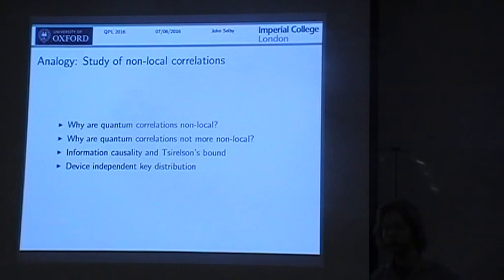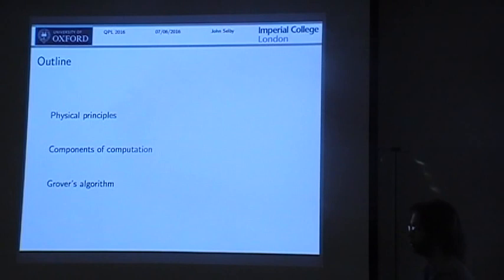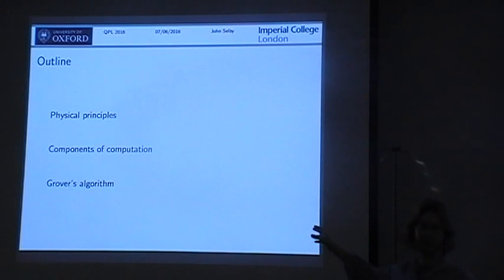For this talk I'm going to introduce the physical principles I'm going to consider in terms of trying to reproduce standard notions of computation within a more general framework. From those physical principles we derive some components of computation, and then we can look at the class of theories that satisfies these physical principles and look at Grover's algorithm to try to identify what's giving the computational speedup.